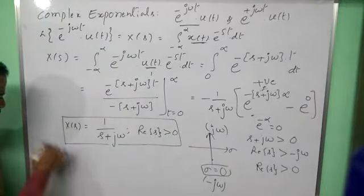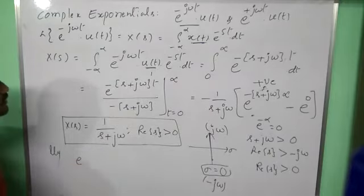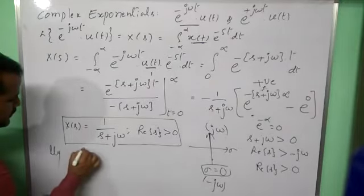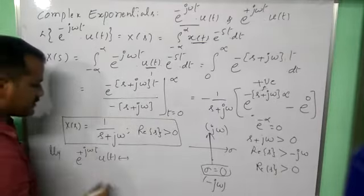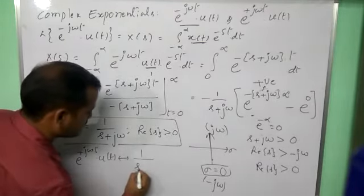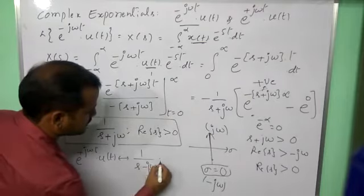In a similar way, we can find the Laplace transform for e^(+jωt)u(t) as simply plus and minus difference, so that 1/(s - jω).